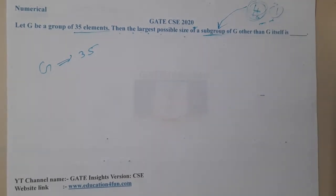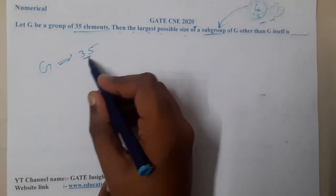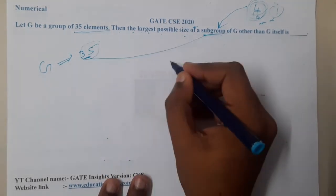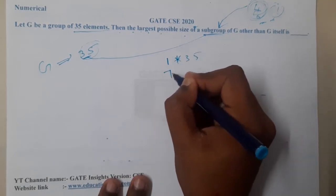This question directly belongs to Lagrange's method. What they say is if there is a group of 35 elements, the subgroup will be a divisor of this. So basically, 1 into 35 I will get 35. Similarly, 5 into 7, that's 35.